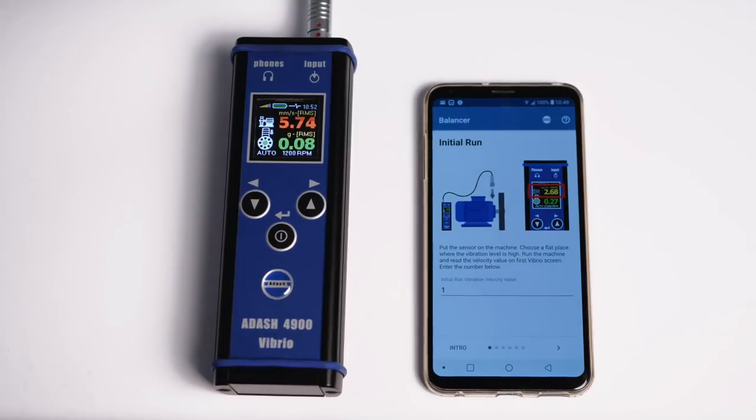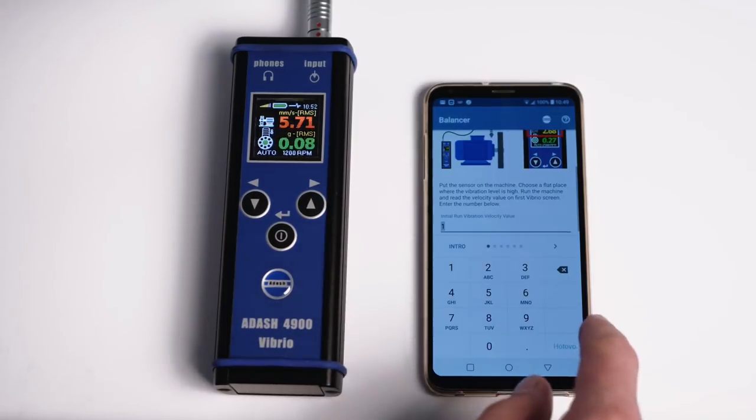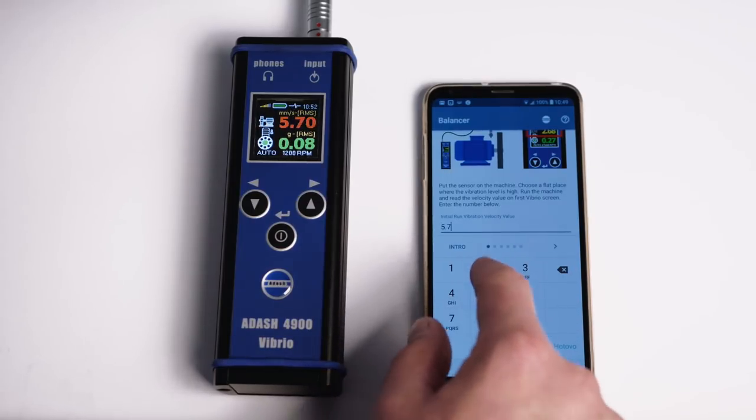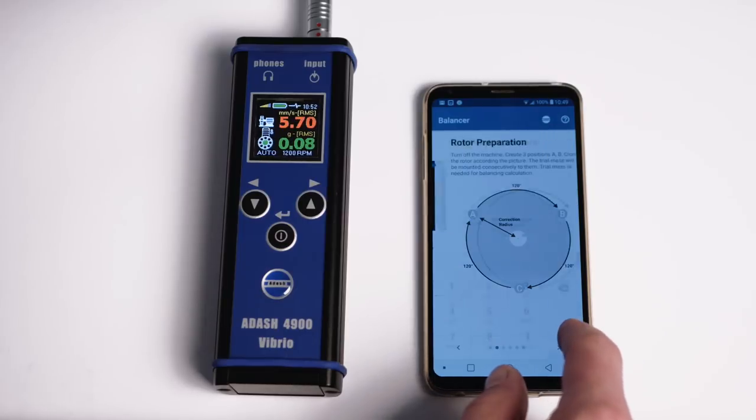As per instructions, place the sensor on the machine bearing house, run the machine, measure velocity in millimeters per second and enter the measured value into the app. Switch off the machine.